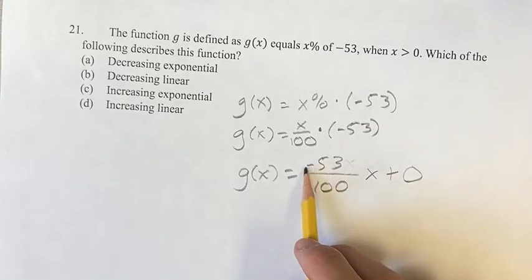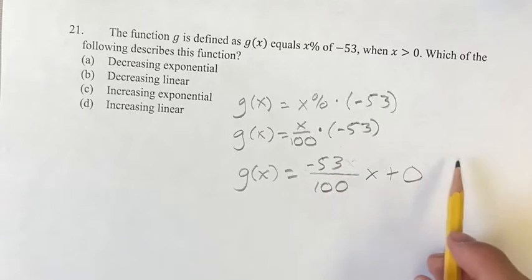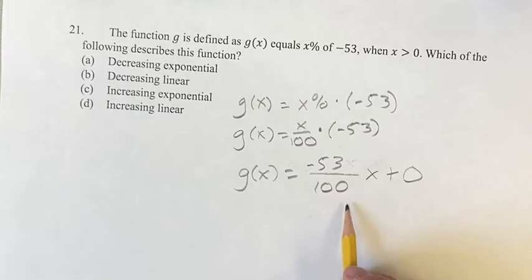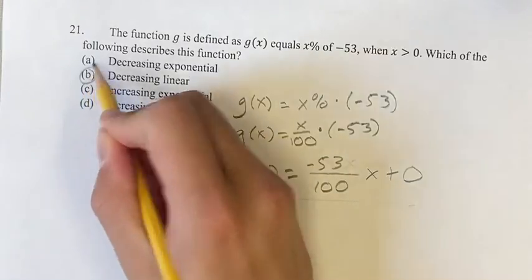The slope is negative. We have negative 53 over 100, negative 0.53 in decimal form. And so we have decreasing because our slope is negative. It's a decreasing linear equation. So it's decreasing linear. That's going to be answer B.